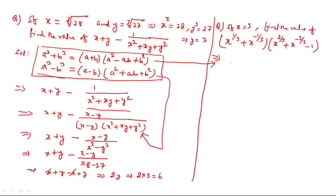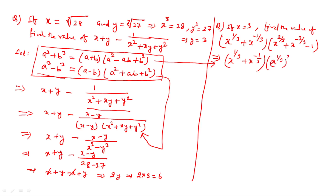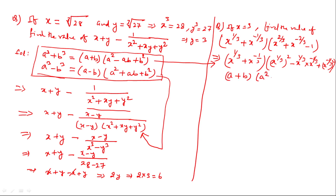So we write: x to the power 1/3 plus x to the power minus 1/3, multiplied by x to the power 1/3 whole squared, minus x to the power 1/3 times x to the power minus 1/3, which equals x to the power 0 equals 1, plus x to the power minus 1/3 whole squared. This fits the formula a plus b times a squared minus ab plus b squared equals a cubed plus b cubed.